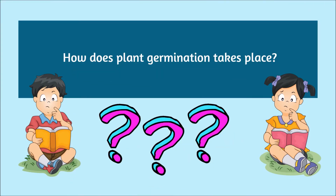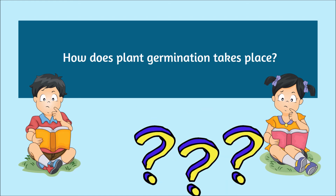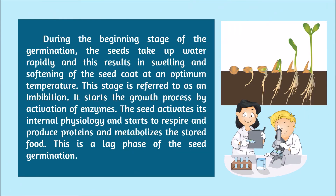How does plant germination take place? During the beginning stage of germination, the seeds take up water rapidly and this results in swelling and softening of the seed coat at an optimum temperature. This stage is referred to as imbibition. It starts the growth process by activation of enzymes. The seed activates its internal physiology and starts to respire and produce proteins and metabolizes stored food.